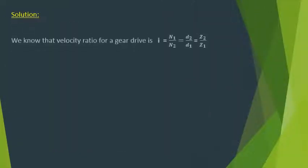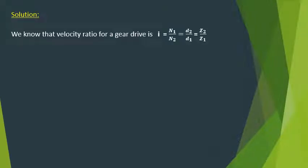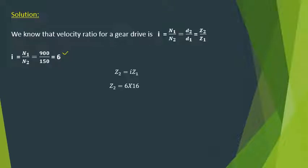Coming to the solution: the velocity ratio is given by n1/n2 = d2/d1 = z2/z1. Since the rpm values for both are known, the velocity ratio is 900/150 = 6. Then z2 = i × z1, so substituting z1 = 16 we get the number of teeth on the gear as z2 = 96.